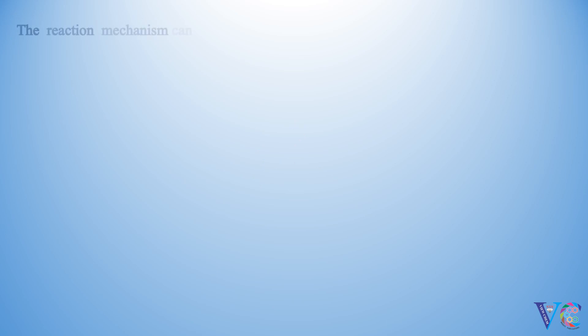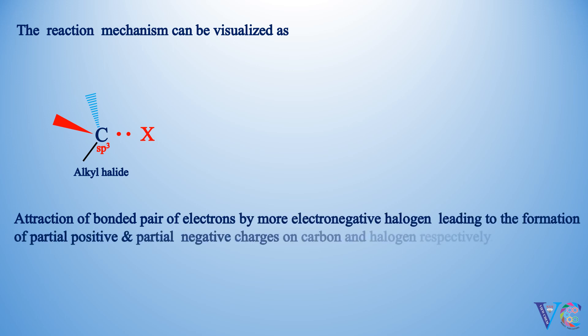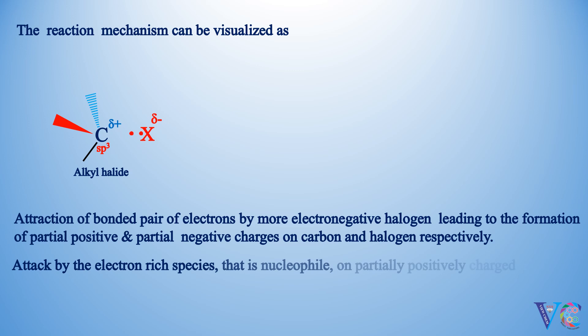The reaction mechanism can be visualized as attraction of bonded pair of electrons by more electronegative halogen, leading to the formation of partial positive and partial negative charges on carbon and halogen respectively. Attack by the electron-rich species, that is nucleophile, on partially positively charged carbon.